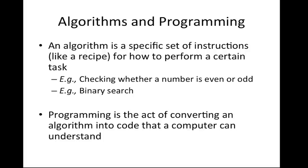Moving into more general computer science topics, we learned what an algorithm is and how we use programming to implement algorithms. A simple example is checking whether a number is even or odd — just mod the number by 2 and check if the result is 0; if so, it's even, if not, it's odd. A more involved example is binary search, which we'll go over later. Programming is the term for taking an algorithm and converting it to code that a computer can read.